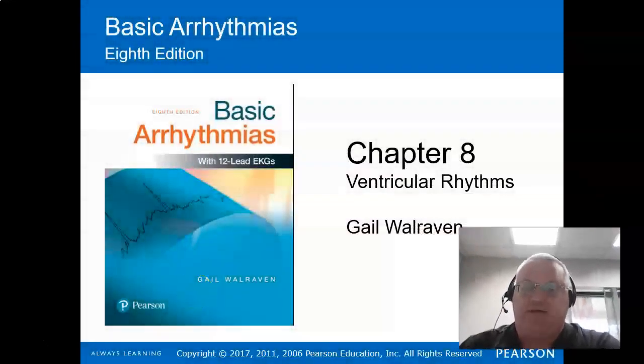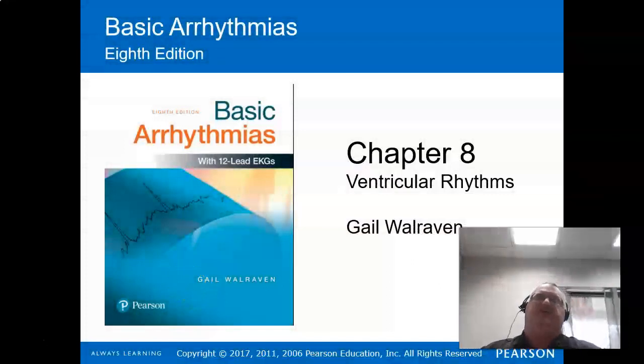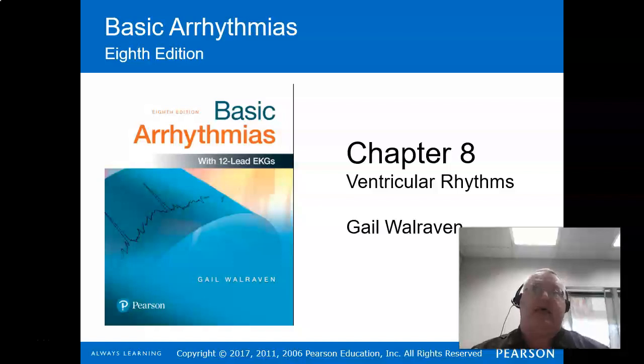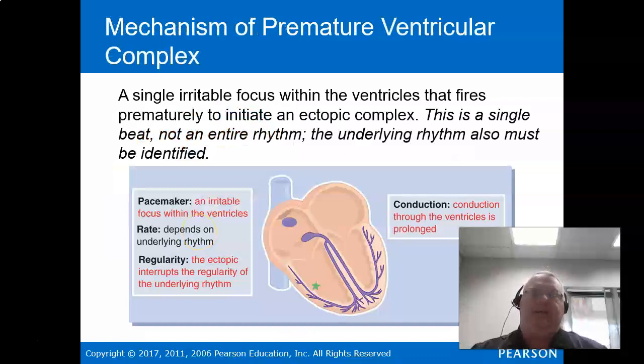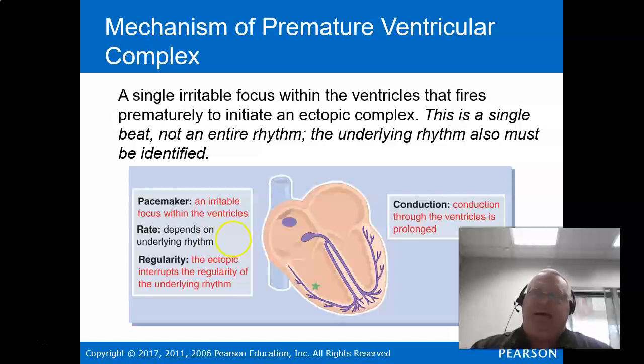Welcome back. This is a two-parter covering chapter eight in the Walraven book on ventricular rhythms. The first part covers premature ventricular contractions. It's important to understand how we describe these — we talked in earlier videos about a PAC and a PJC, which are usually narrow. A PVC is coming from an irritable focus.